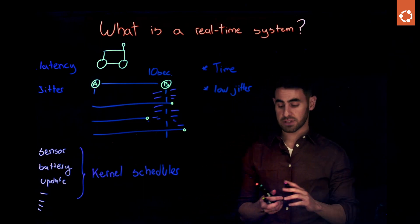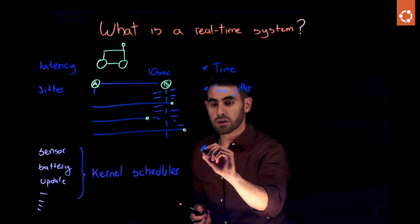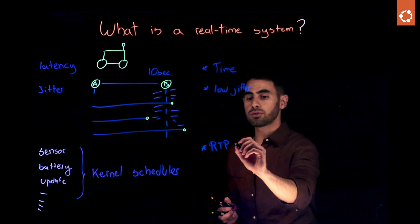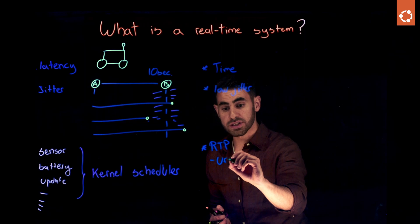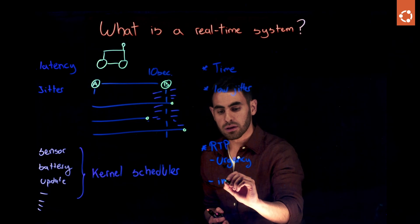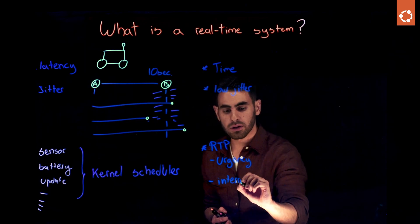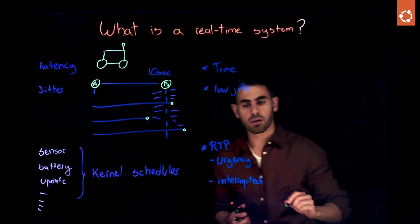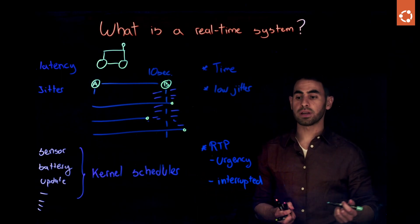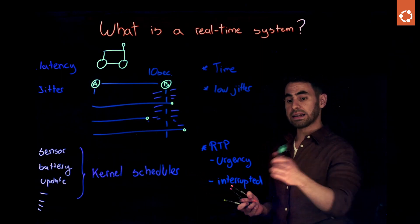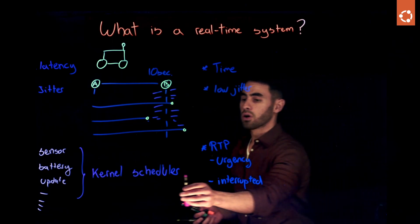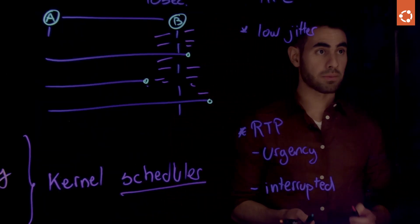Now, in a real-time system, we have real-time processes that need to run with certain urgency and cannot be interrupted. So, for instance, sensor is running with a high priority, with an urgency, and it cannot be interrupted by any other activity. And that is the job of the scheduler in a real-time system.